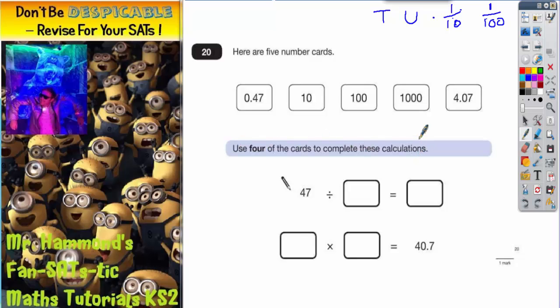If we decide what this question is about, this question is about multiplying and dividing by 10, 100, or 1000. It's about place value.